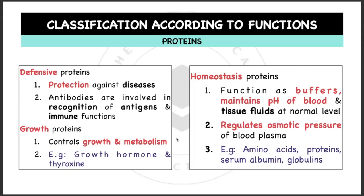Growth proteins control the growth and metabolism such as the growth hormone and the thyroxine. Homeostasis proteins function as buffers. They maintain the pH of the blood and tissue fluids at a normal level. They also regulate osmotic pressure of blood plasma. Examples would be amino acids, proteins, serum albumin, and globulins.